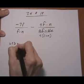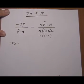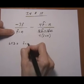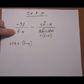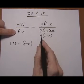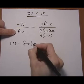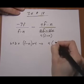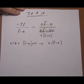So the LCD for these two fractions is take the entire first denominator F minus N. That's one factor. Then from the second denominator take whatever is missing, and the four is missing here. So we'll do times four. So four times F minus N is our common denominator.